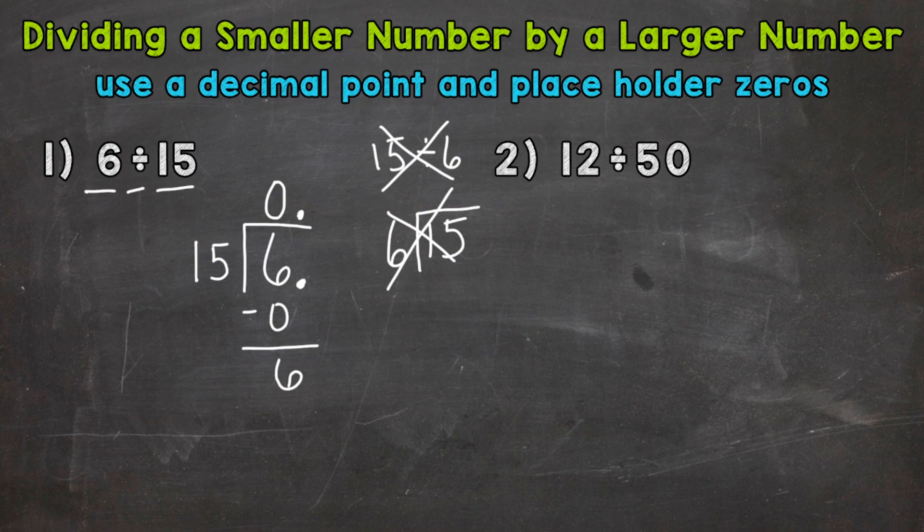We need something to bring down. So what we can do, we can place a 0 to the right of that decimal. That doesn't change the value of the 6 or the value of the problem. So we can do that. So now, let's bring that 0 down and continue our process.